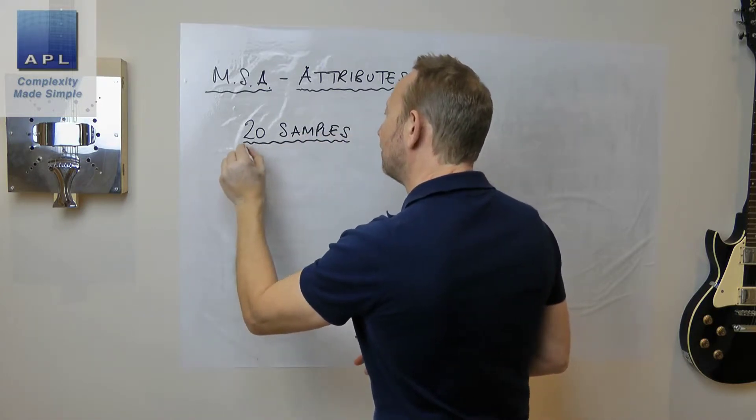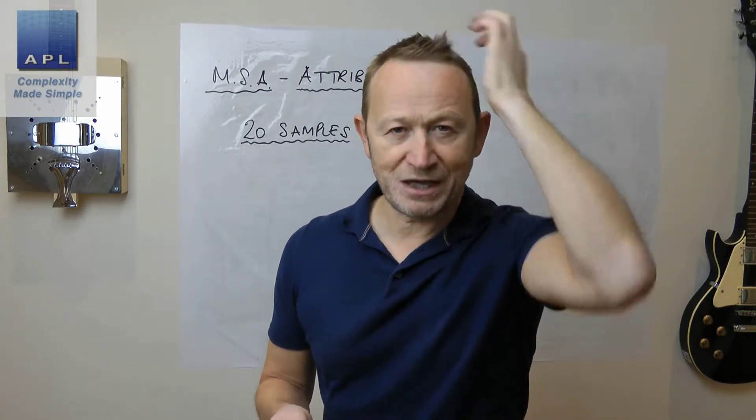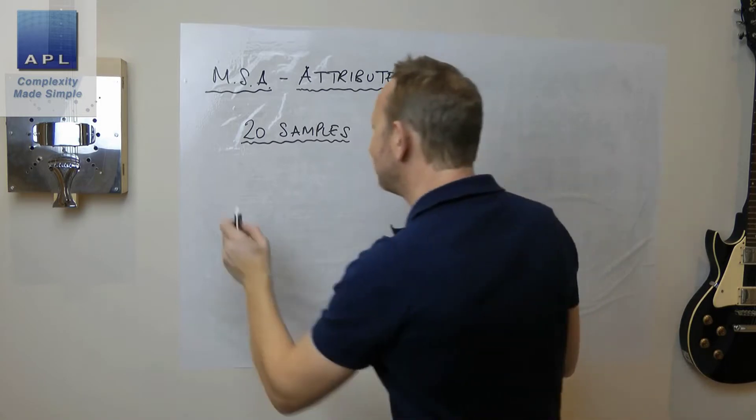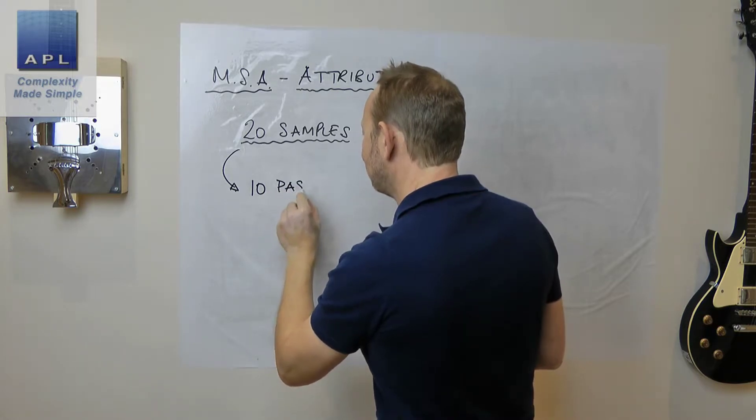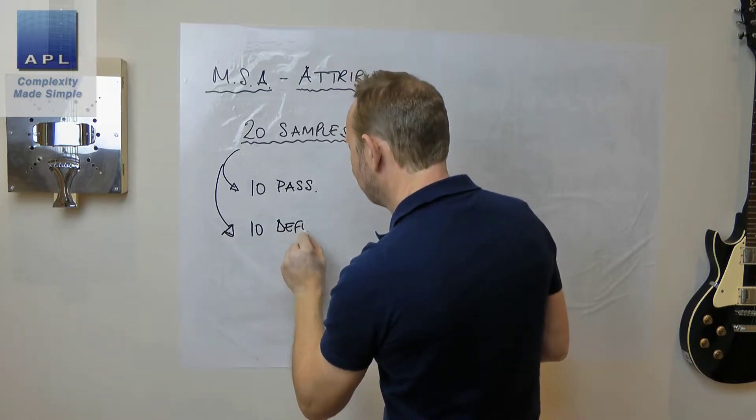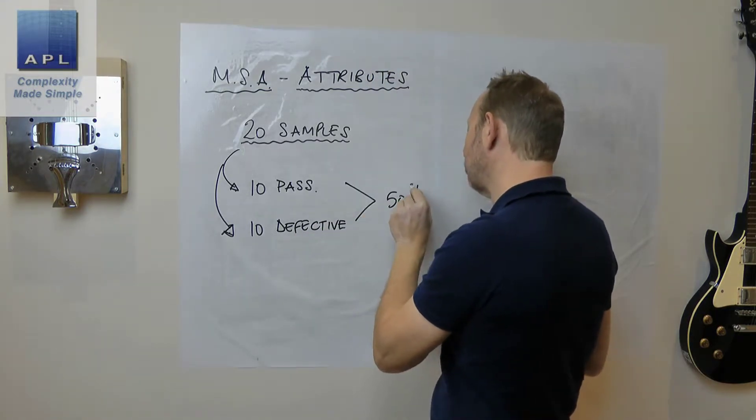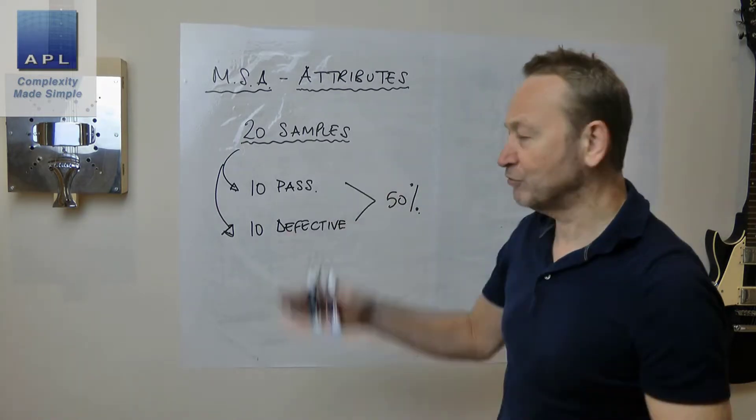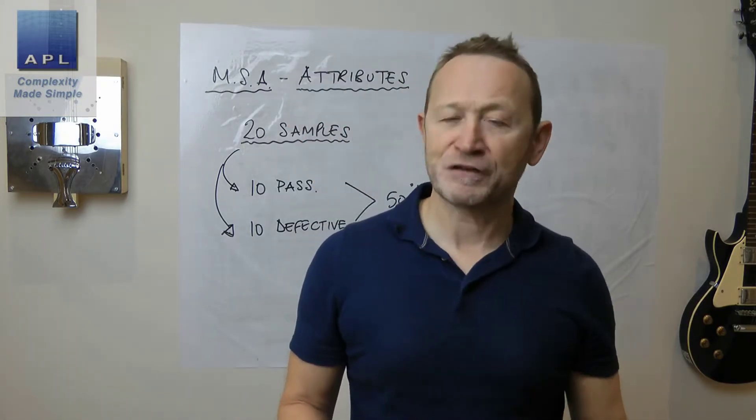Now, normally what we do is we get 20 samples. And unlike the other MSA, the MSA for variable data where you would randomly select the samples, what you're going to do here is actually specifically select the samples. Because for the 20 samples, they must be 10 that pass and 10 which are defective. And it must be a 50-50 split.